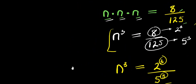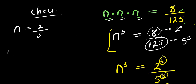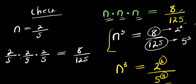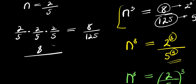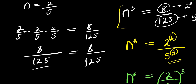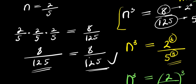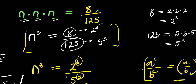Now if you want to check, just insert the real solution n equals 2/5: you get 2/5 times 2/5 times 2/5, which equals 8/125. Two times two is 4, times 2 is 8 for the numerator; 5 times 5 times 5 is 125 for the denominator. Left hand side equals right hand side — impressive! So that is it guys, thank you and see you again.